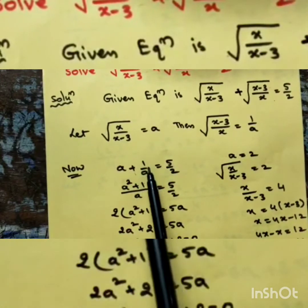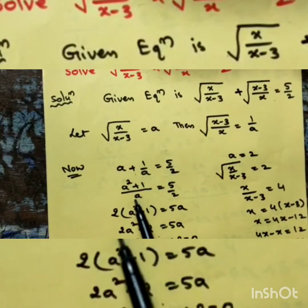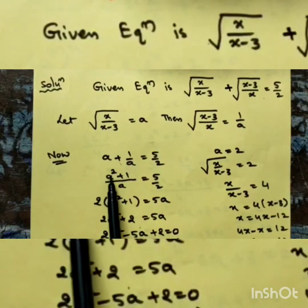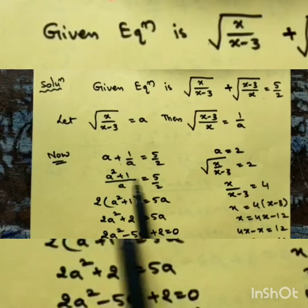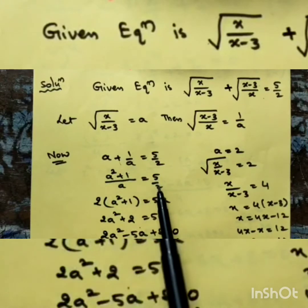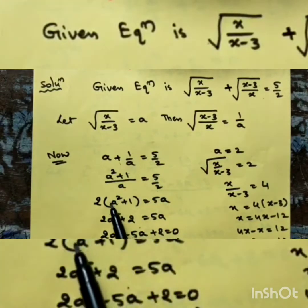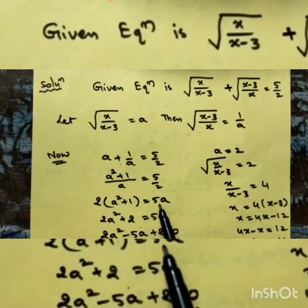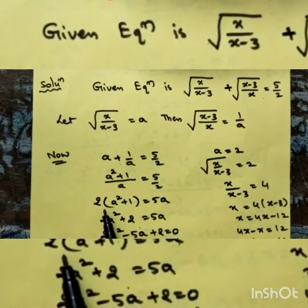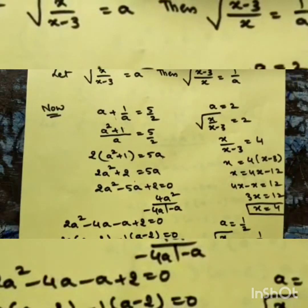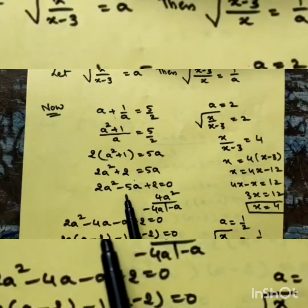As it is a fraction term we do LCM. With a as LCM, the first term becomes a² + 1 = 5/2. Cross multiplication gives 2(a² + 1) = 5a. Opening the bracket: 2a² + 2 = 5a. Sending 5a to the left side: 2a² - 5a + 2 = 0.